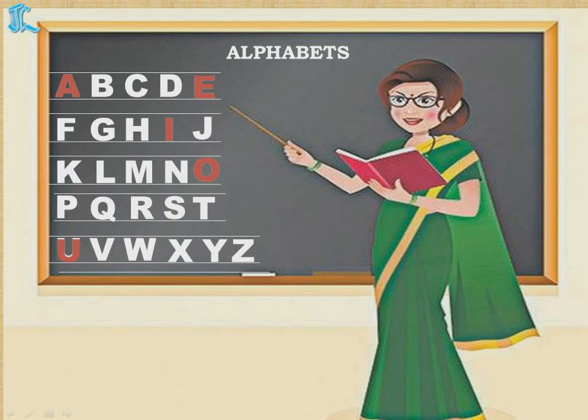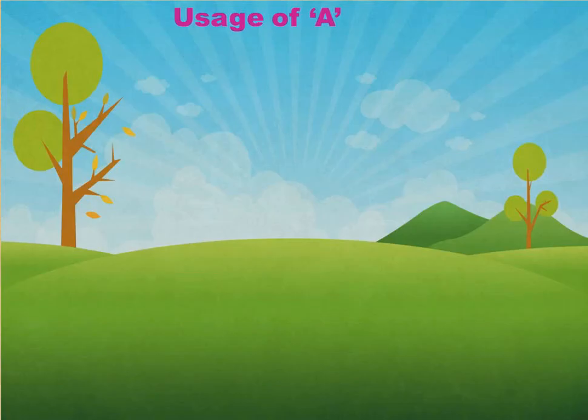Other than vowels, all other alphabets are known as consonants, yes or no? Other than the letters A, E, I, O and U, all other alphabets are known as consonants.